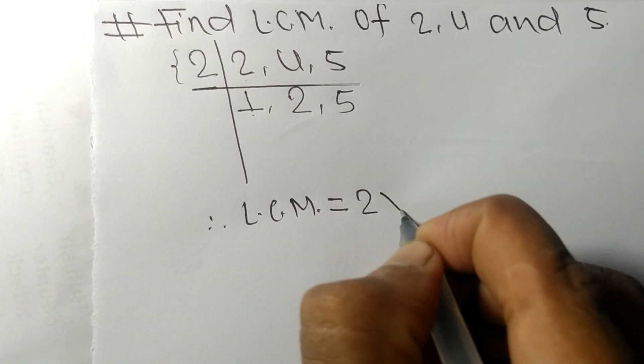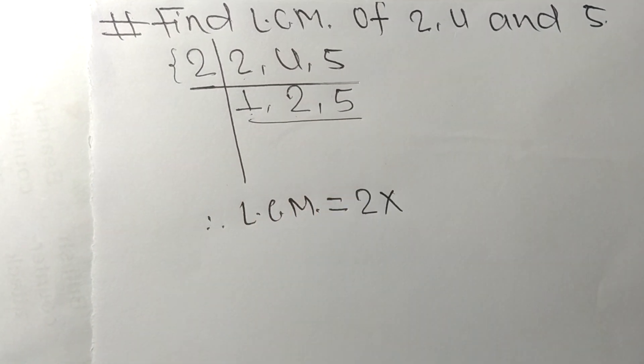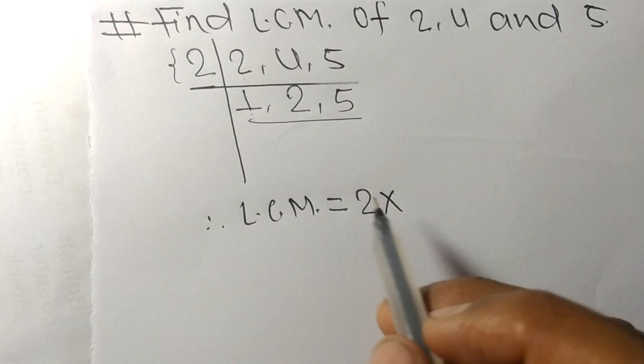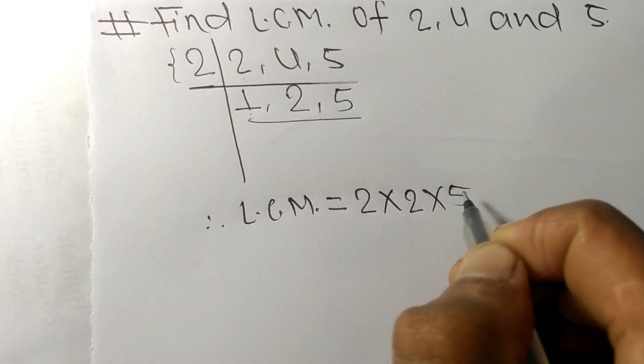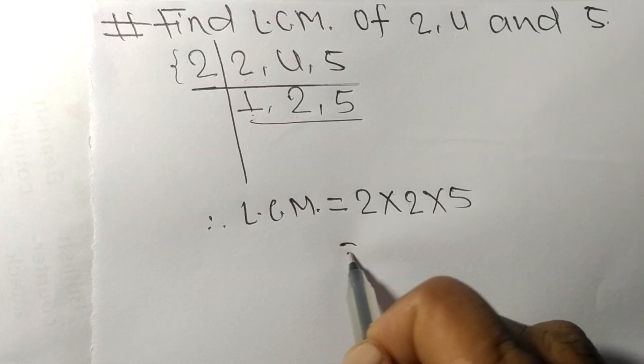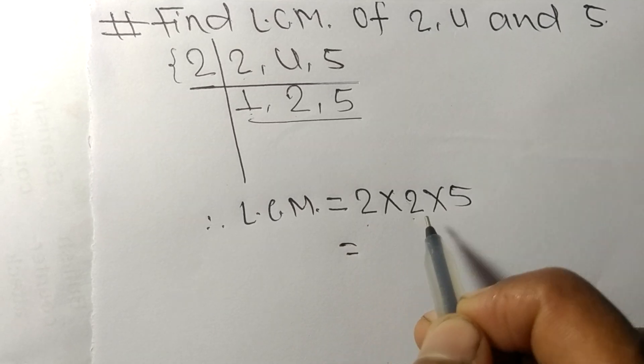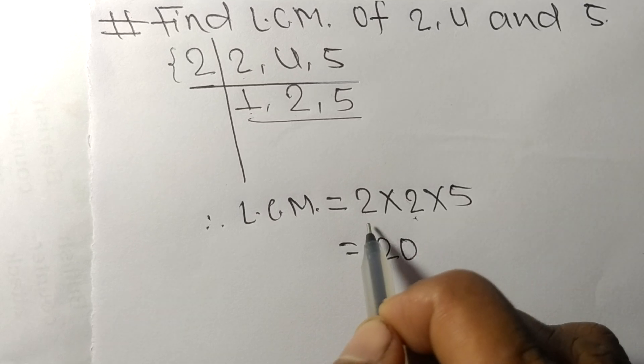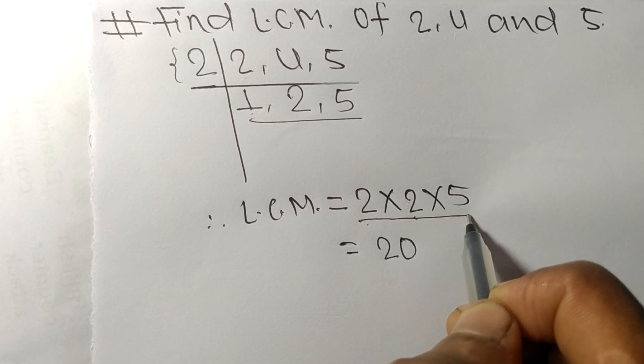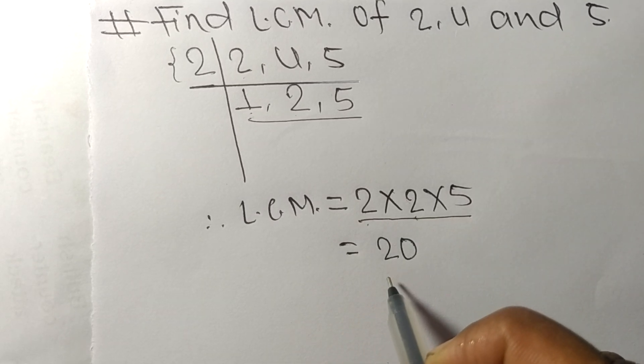From this side it is 2. From here we take the numbers greater than 1, that is 2 and 5. So 2 times 2 means 4, 4 times 5 means 20. By multiplying all these numbers we got 20.